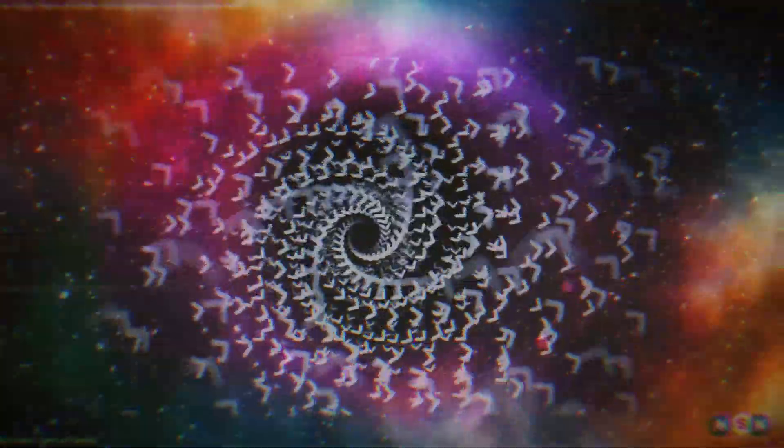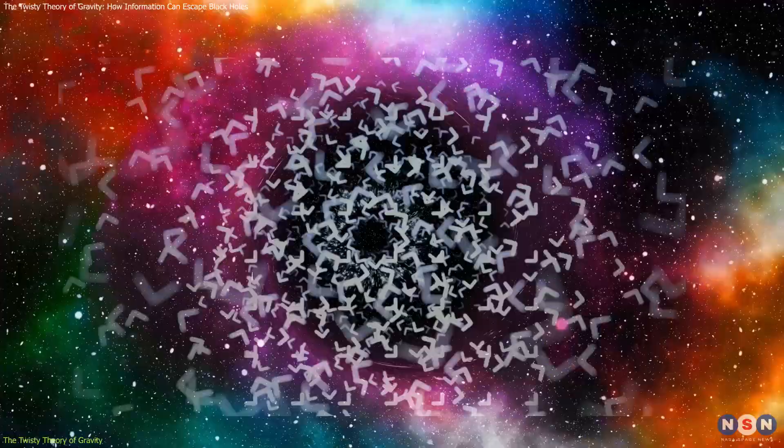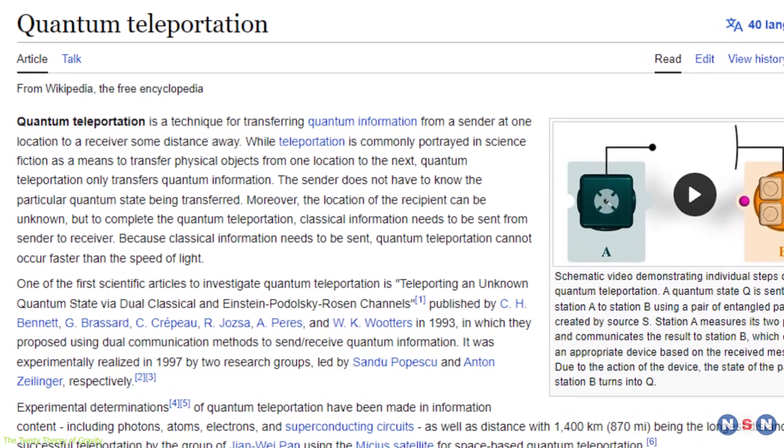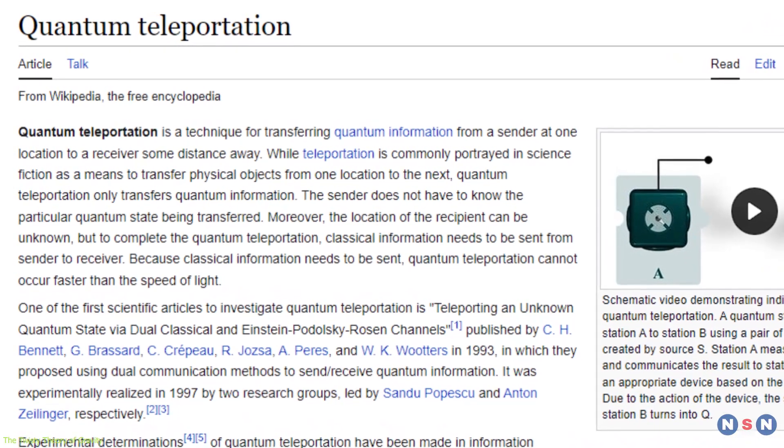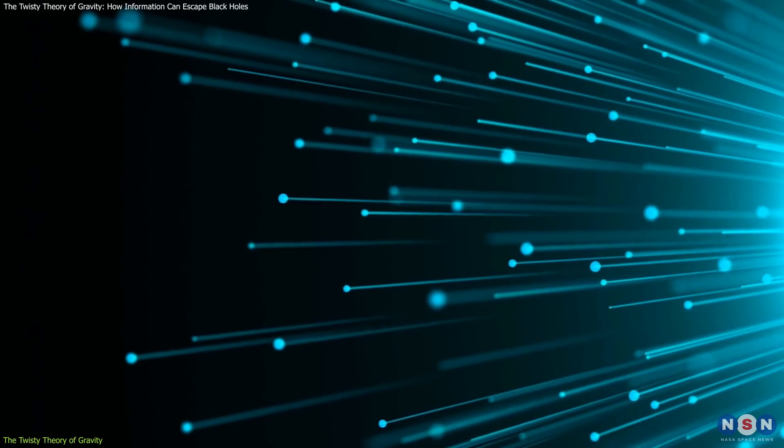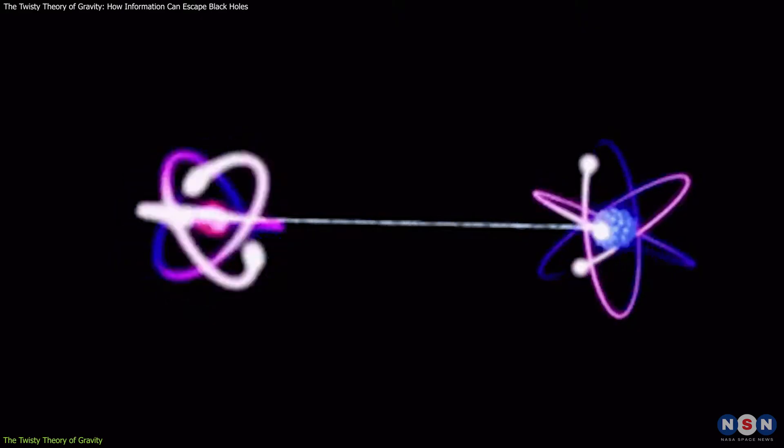Second, it implies that information can escape black holes through quantum teleportation, which is a process that allows the transfer of quantum states from one location to another using entanglement and classical communication. Quantum teleportation does not violate causality or the speed of light, because it requires both entanglement and classical communication to work.